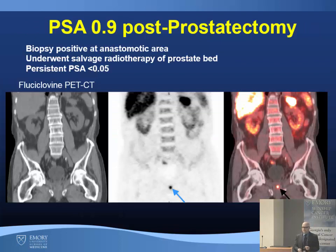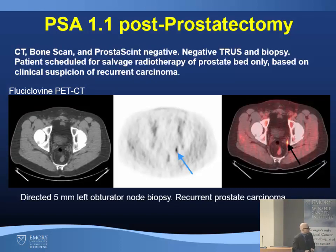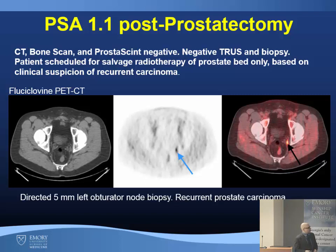One patient with a PSA of 0.9 post-prostatectomy showed positivity at the anastomotic area; biopsy was positive and the patient underwent salvage radiotherapy with PSA nadir below 0.05. Another patient with negative conventional imaging, CT, bone scan, ProstaScint, and negative transrectal ultrasound biopsy with PSA 1.1 post-prostatectomy was scheduled for salvage radiotherapy. With fluciclovine PET, we detected a 5mm positive lymph node in the left obturator region; this was biopsy-proven recurrent prostate cancer, changing the plan for the patient.